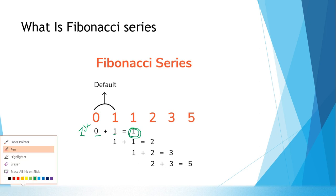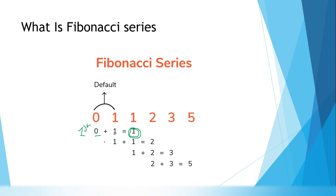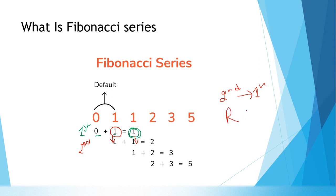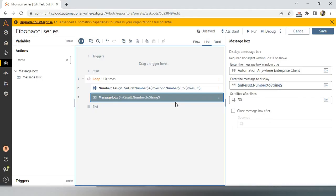Now for the second iteration we have to do some alteration. In the first iteration we used default values zero plus one. But in the second iteration, whatever was the second value of the first iteration, I need to take that as my first number, and I take the result as my second number. So second number becomes first number and result becomes second number — this is the basic logic.